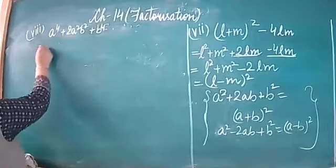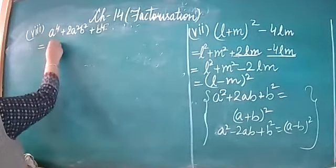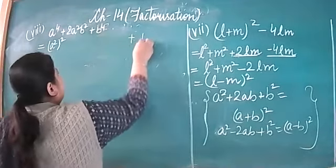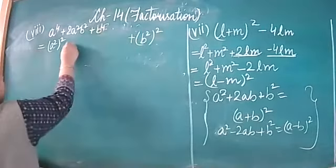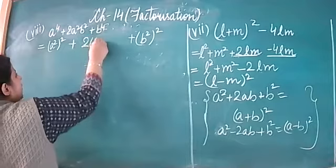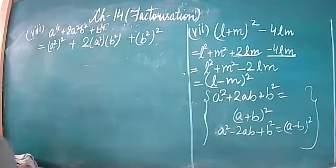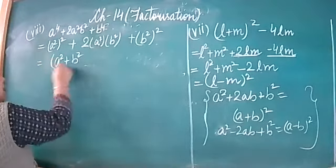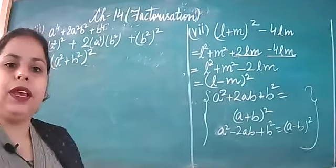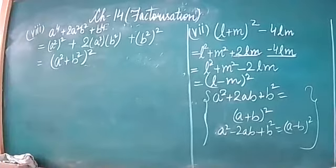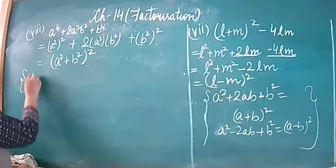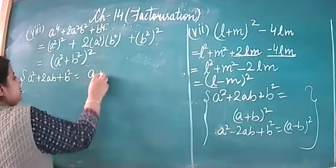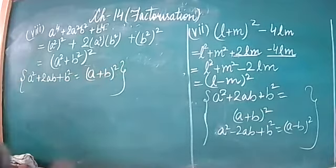Now what do we need to do? A to the power 4 can be written as (a squared) whole square. Similarly b to the power 4 is (b squared) squared. So this will come out to be (a squared plus b squared) whole square, using the identity a squared plus 2ab plus b squared equals (a plus b) whole square.